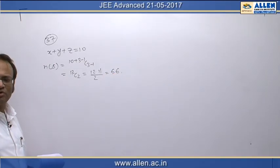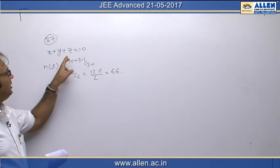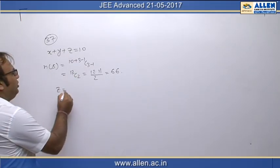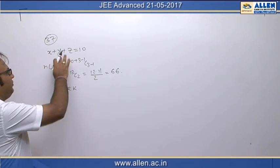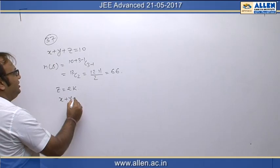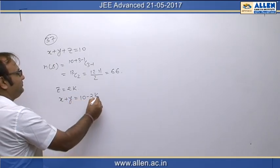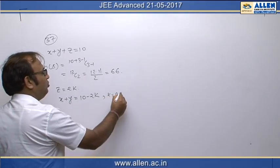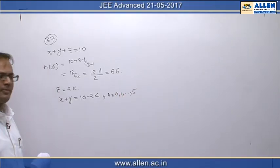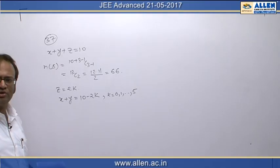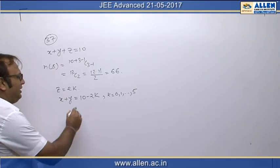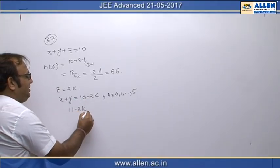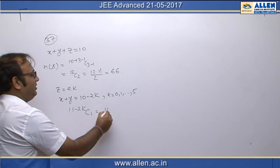These are the total possible outcomes of this experiment. Out of these we have to choose the ones in which z is an even number. Let us consider z as equal to 2k, then the equation becomes x plus y equal to 10 minus 2k, where k can vary from 0, 1, 2 to 5. The non-negative integral solutions of this equation are 10 minus 2k plus 2 minus 1, that is 11 minus 2k C1, which equals 11 minus 2k.